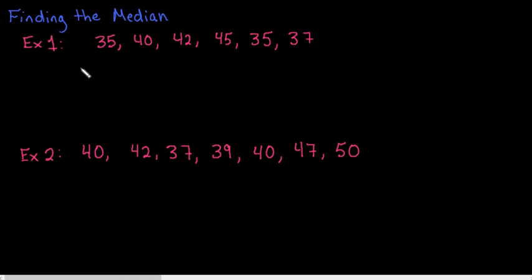Our lowest value is 35 and we have two of them, so we write each of them here. Our next value would be 37, followed by 40, 42, and 45.